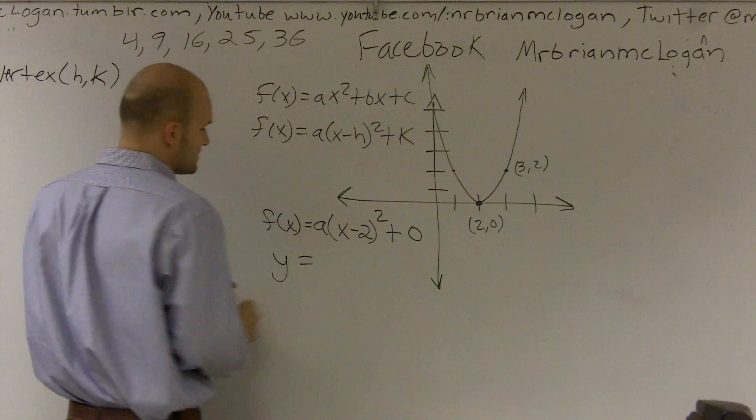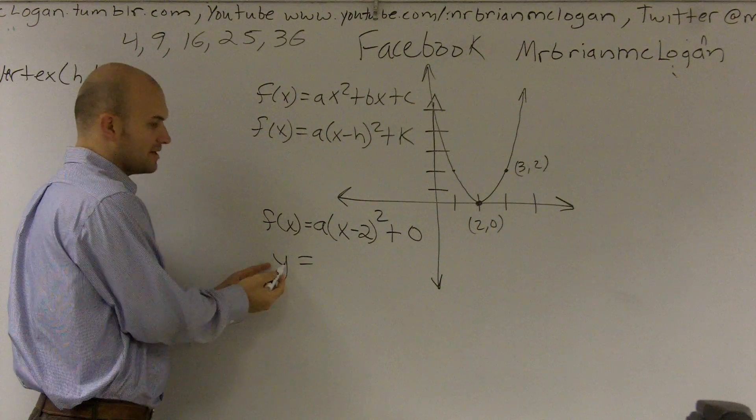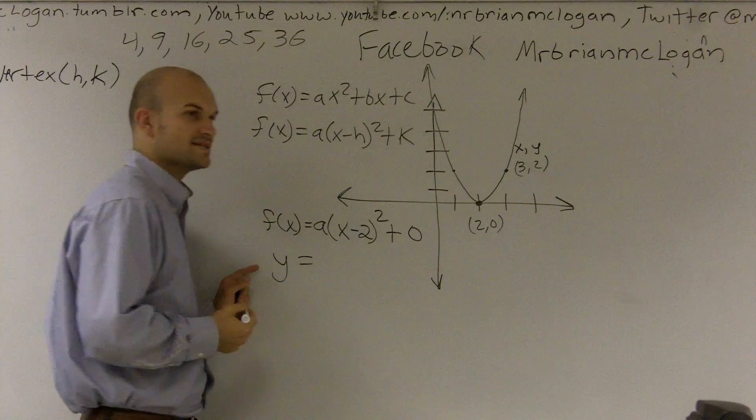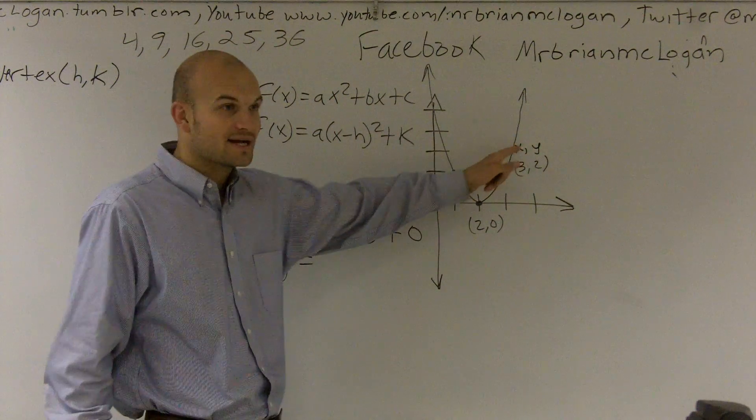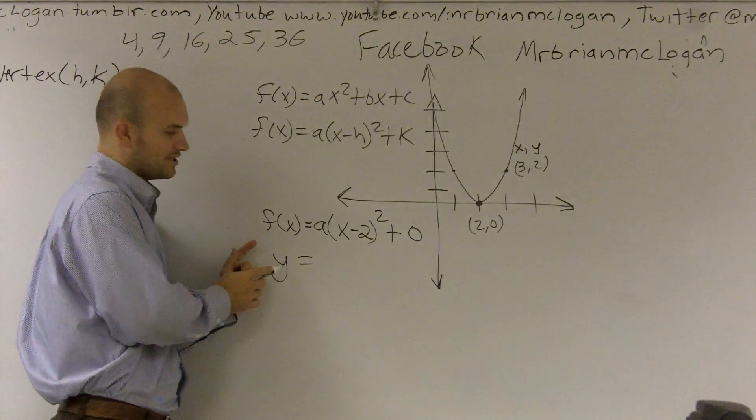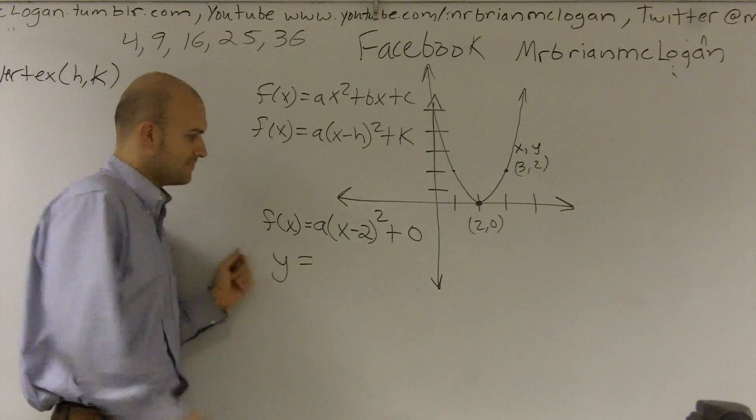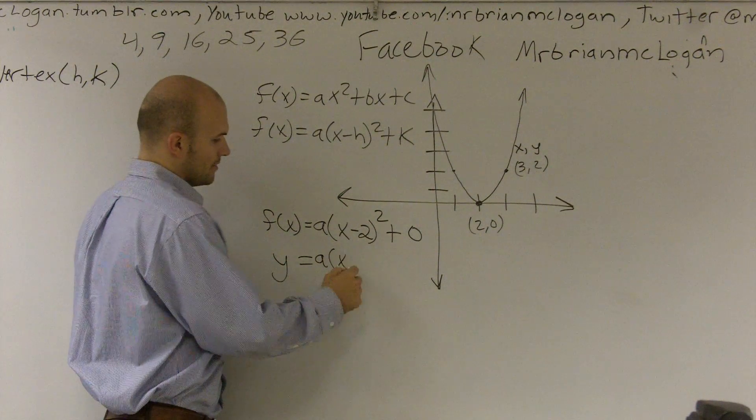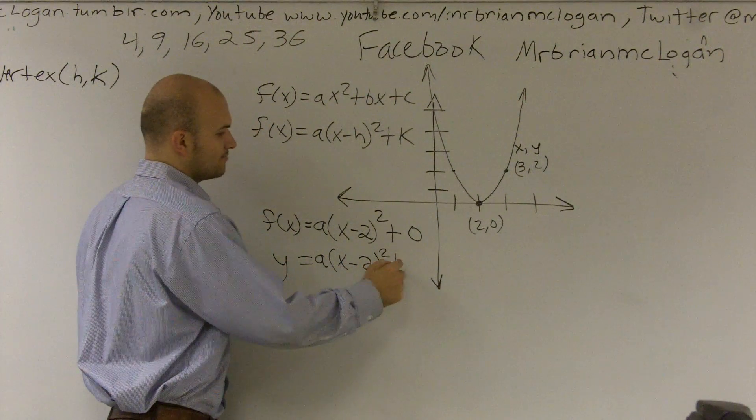So what I can do is, if I say, instead of f of x as my output, I'm going to use y. Because we know coordinate points, we like to write them as x and y. You also could have written them as x and f of x. But I think just for you guys, going back from what you've learned, it's ingrained in you using y. So, I'll say y equals a(x minus 2) squared plus 0.